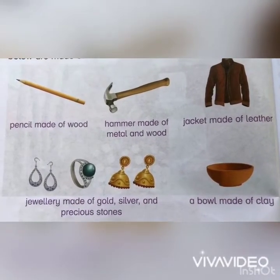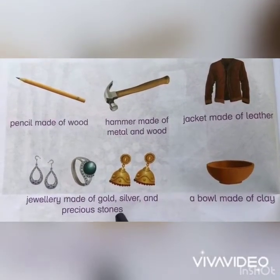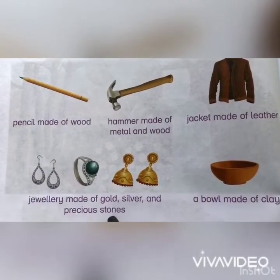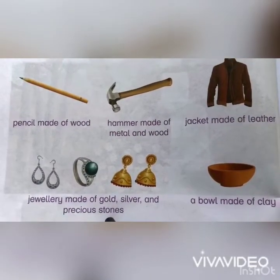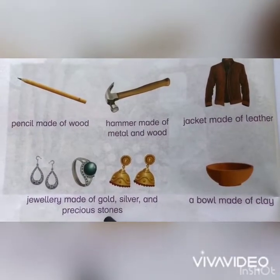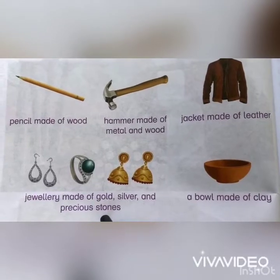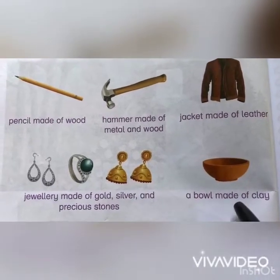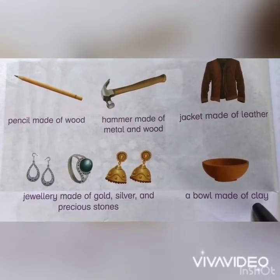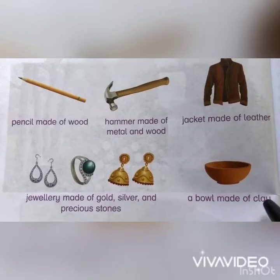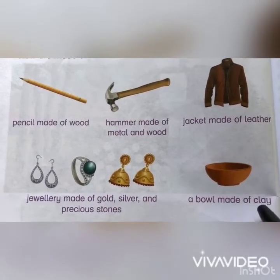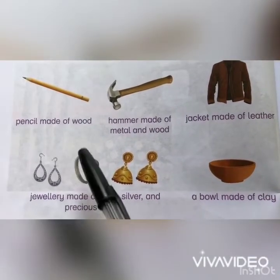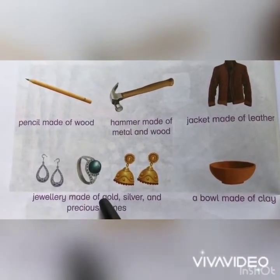Jewelry is made from gold, silver, and precious stones that are extracted from rocks and underground. A bowl is made of clay — and where do we get clay from? From mud or sand.